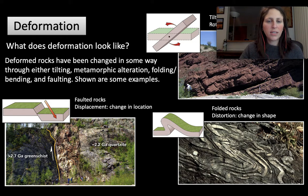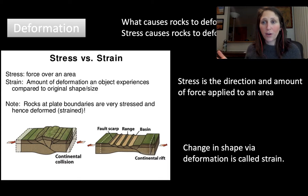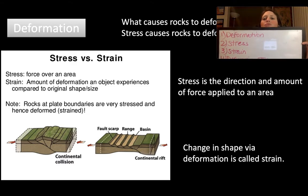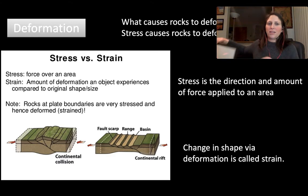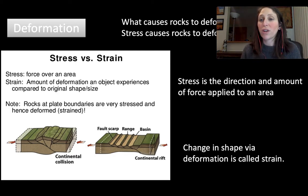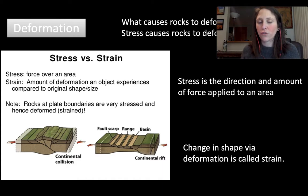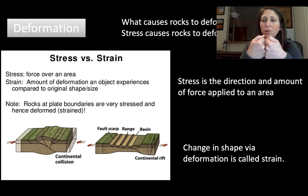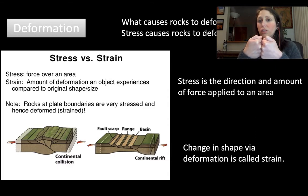Let's look at each of these in a little bit more detail. How do we get deformation? Let's talk about stress and strain. Stress is the direction and the amount of force applied to an area. All rocks, when they're being deformed, are feeling some type of stress. They're either being compressed and compacted together, as in collision zones at convergent plate boundaries, experiencing a compressional amount of stress.